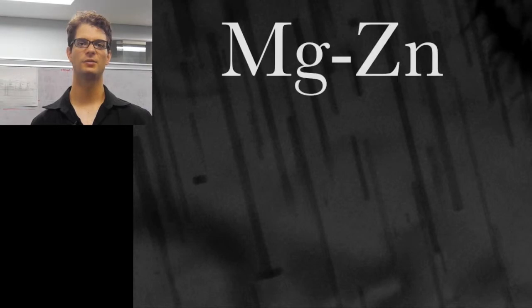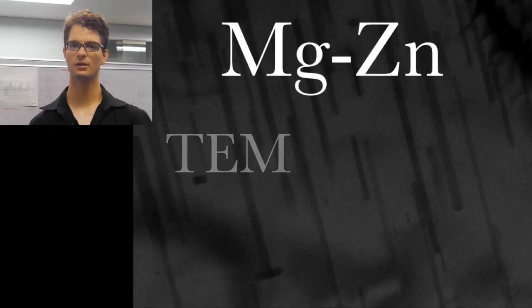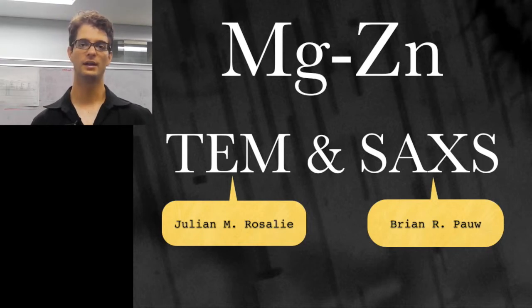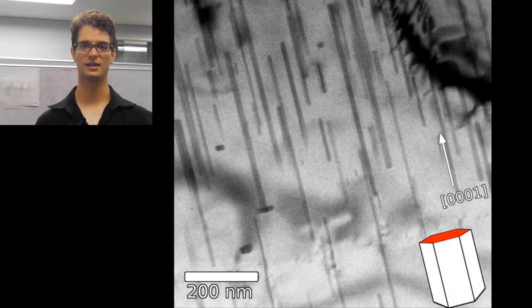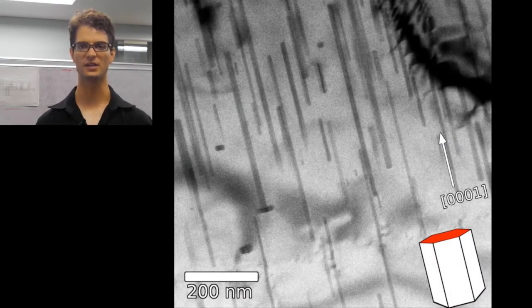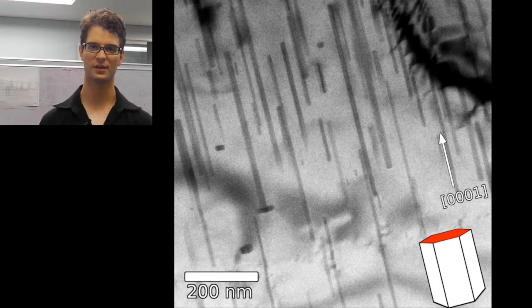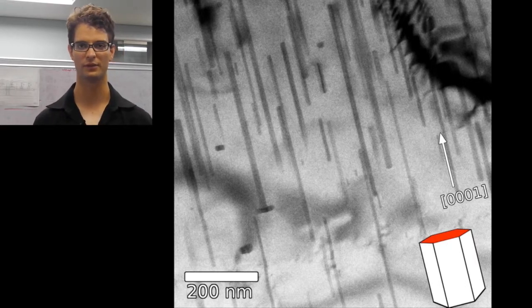We investigated magnesium zinc alloys using a combination of electron microscopy and small angle scattering. The interesting thing about these alloys is that inside their magnesium matrix, they contain very elongated magnesium zinc precipitates. Since these precipitates have such a high aspect ratio, they very much affect the mechanical properties of the material.